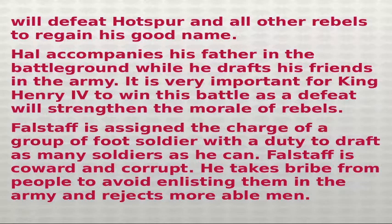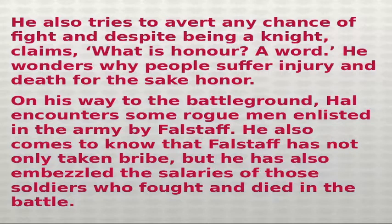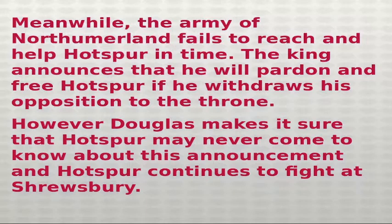Hal accompanies his father to the battleground while drafting his friends into the army. It is crucial for King Henry IV to win this battle, as defeat would strengthen the morale of the rebels. Falstaff is assigned charge of a group of foot soldiers. Being a coward and corrupt, he takes bribes from people to avoid enlisting them and rejects more able men. He tries to avert any chance of combat and, despite being a knight, asks: 'What is honour? A word.' He wonders why people suffer injury and death for the sake of honour.